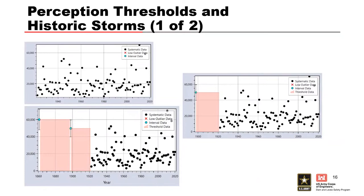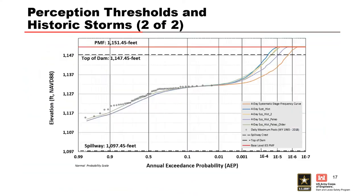The volume frequency curve parameters can be sensitive to the choices made in the best frequency analysis. How we select perception thresholds and estimate flow intervals for historical floods can impact the shape of our inflow volume frequency curve. Sensitivities on this information can be developed and run with RMC RFA to evaluate how sensitive the stage frequency curve is to these flow frequency inputs. In the example shown, just systematic data was compared against including one historic flood with a perception threshold versus two historic floods with perception thresholds. Five volume frequency curves were developed using different assumptions, with results showing greater than an order of magnitude spread at the top of dam — classifying this as primary risk impacts.